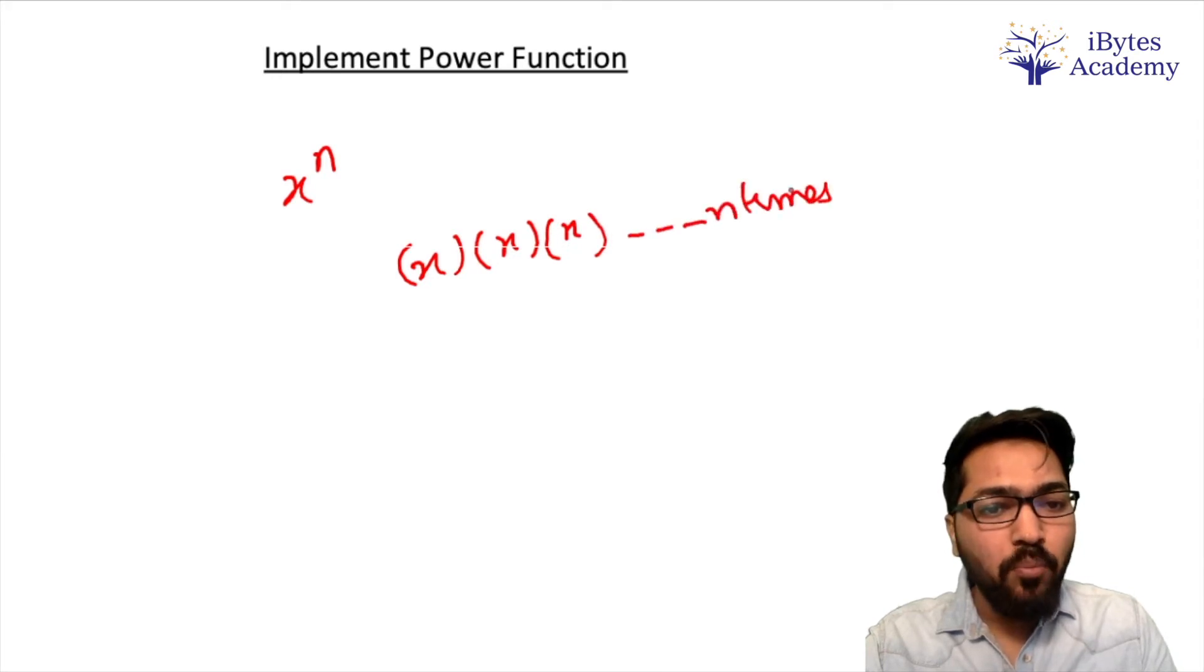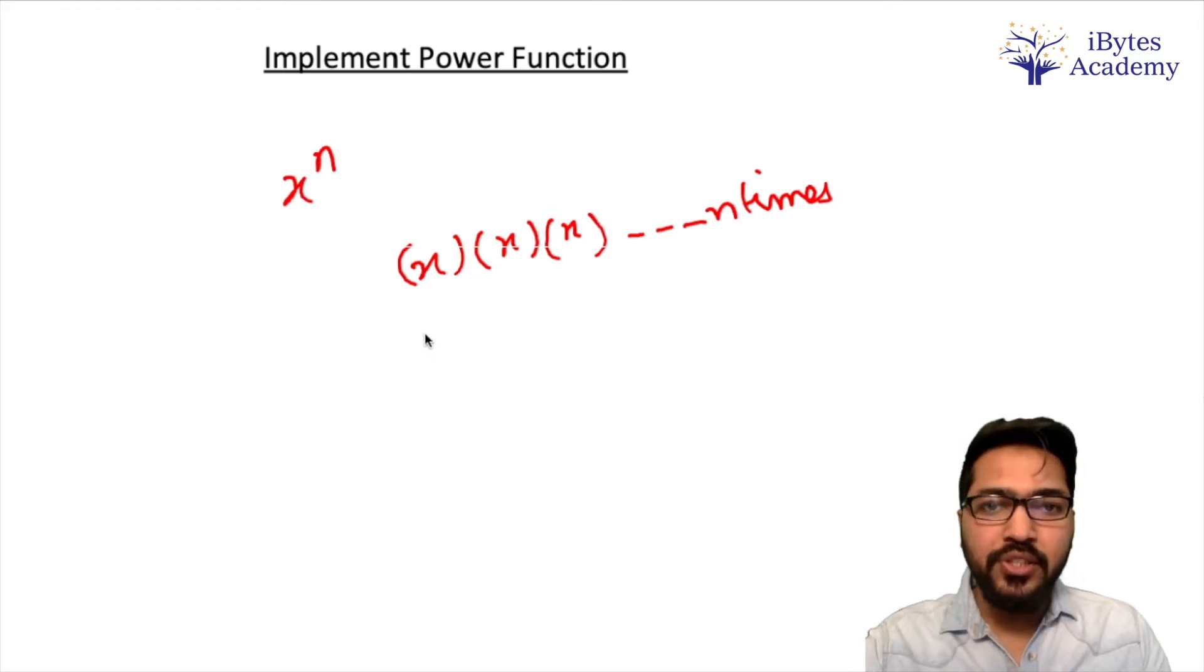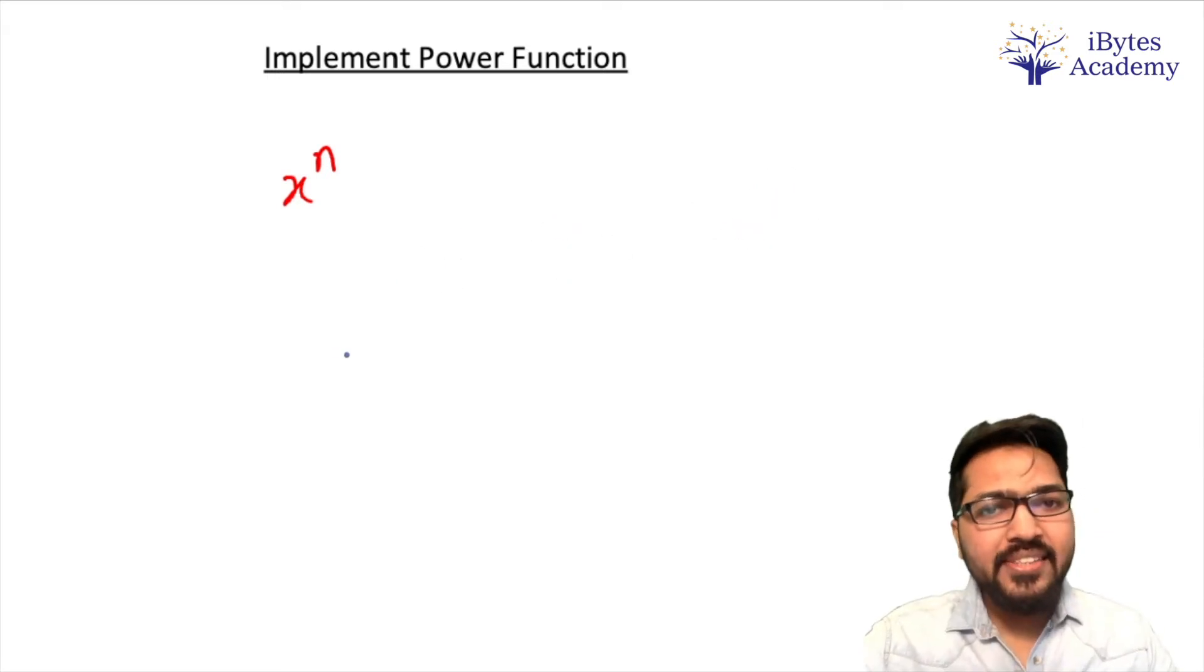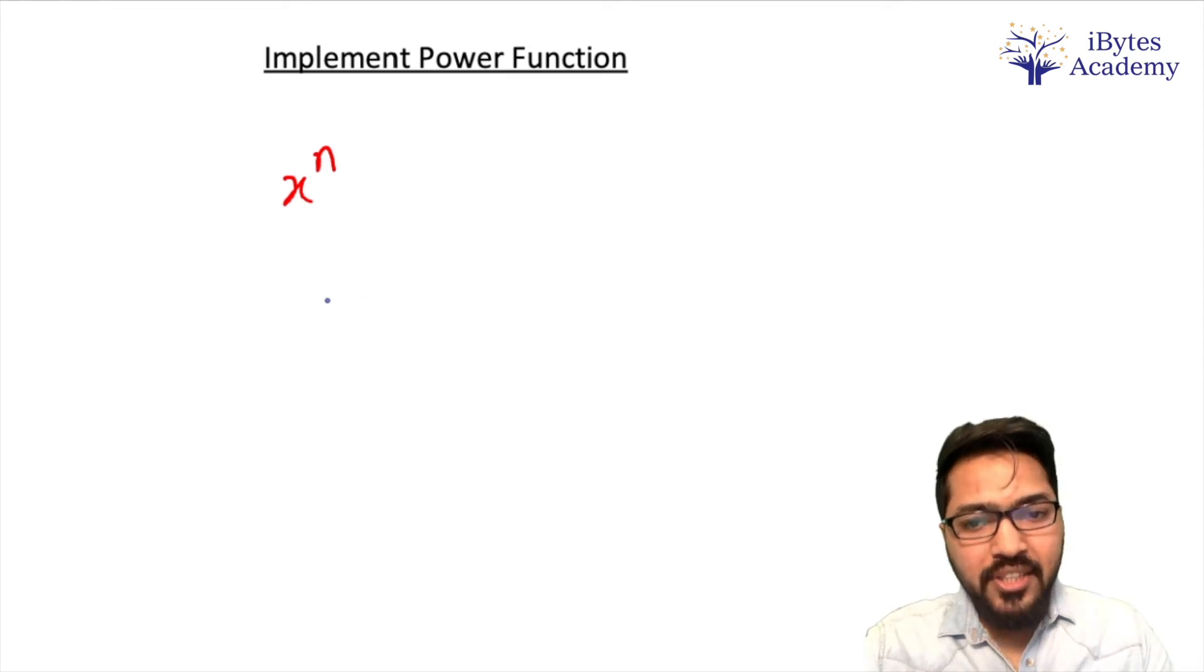But the thing is that we will use a very simple property that x to the power n is equal to x square to the power n by 2. Right?